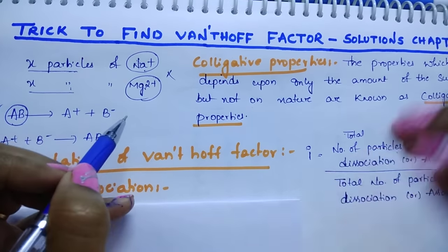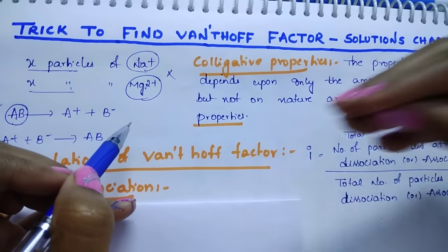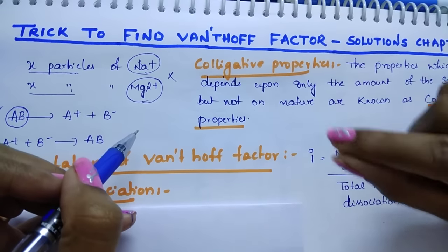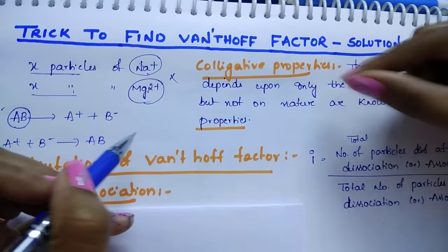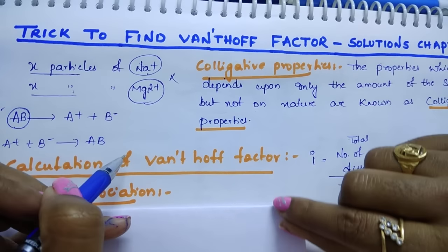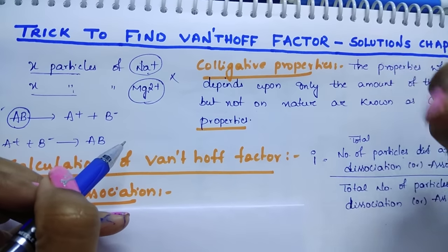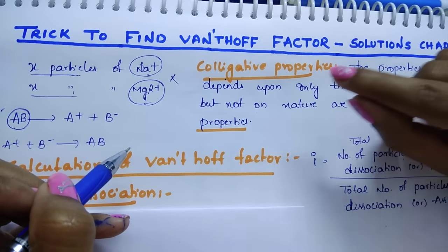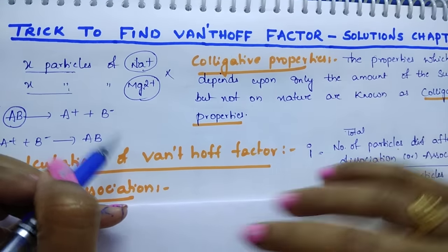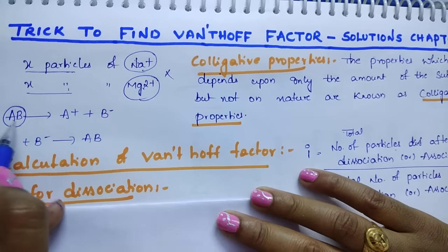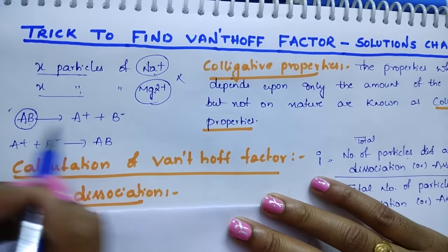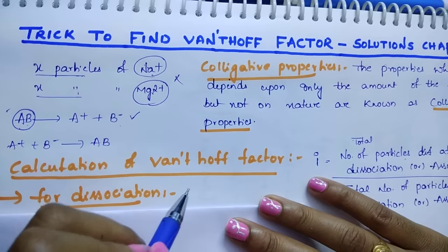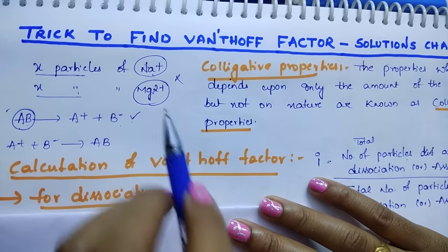If you dissolve a particular solute or electrolyte in a solvent, and if it undergoes either association or dissociation, the number of particles changes. If the number of particles changes, colligative properties also change. For example, AB dissociates into A⁺ and B⁻ — the number of particles changes, so colligative properties also change.